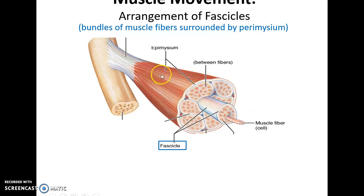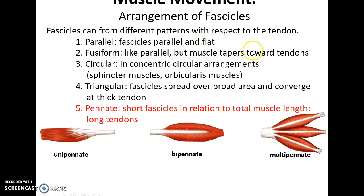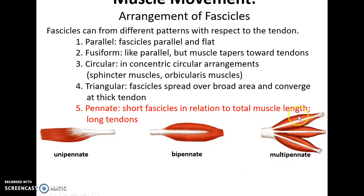Arrangement of fascicles: fascicles within a muscle organ can be arranged in different orientations. They can be parallel — all flat and going in the same direction. They can be fusiform, where they taper at the ends but are thick in the middle where the muscle belly is. They can be circular, where they insert into themselves forming a circular structure. They can be triangular, spread out and coming toward one single thick tendon, such as the deltoid muscle. Or they can be pinnate, where a long tendon has fascicles connecting to it — unipinnate (all attached to the same side), bipinnate (attached to either side of the tendon), or multi-pinnate (many bipinnates coming together into one thick tendon).